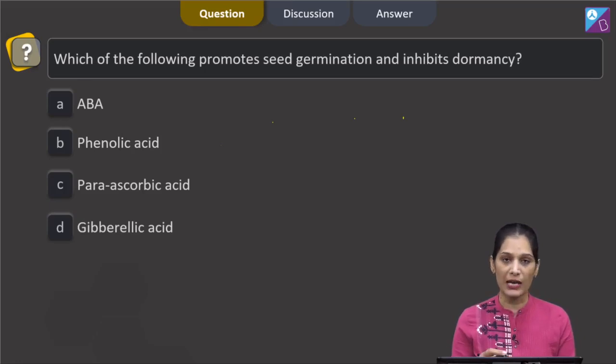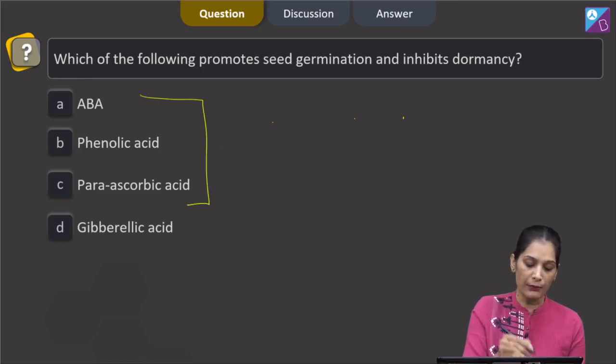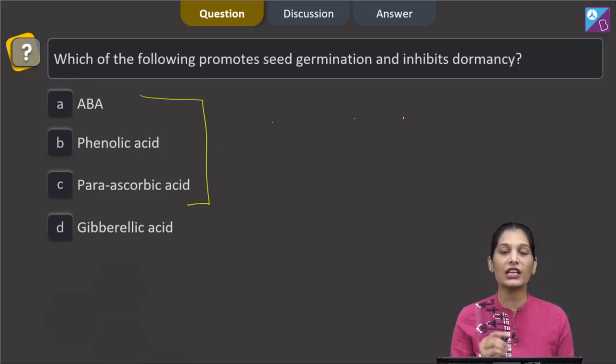ABA stands for abscisic acid, then phenolic acid, parascorbic acid. All of them promote seed dormancy, means they do not let seeds germinate, whereas gibberellic acid inhibits dormancy and promotes seed germination.